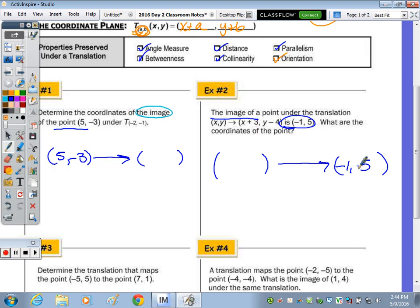And number one, when you want to find the image under the translation ⟨-2, -1⟩, you just simply subtract 2 and subtract 1, and the image is going to be 5 minus 2, which is 3, and -3 minus 1 is -4.